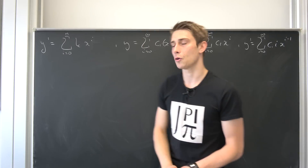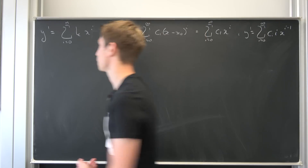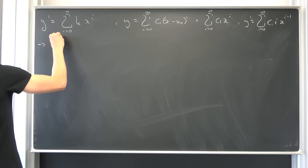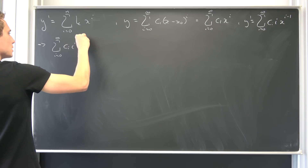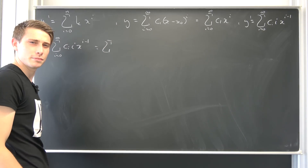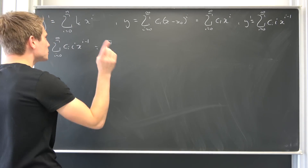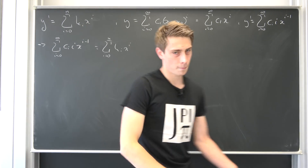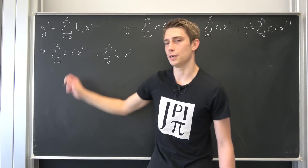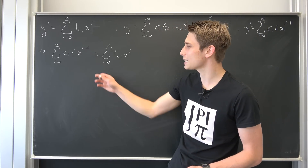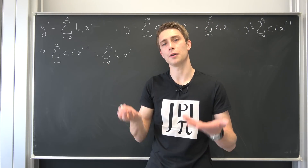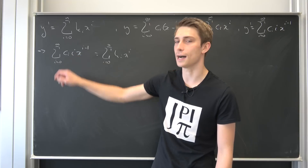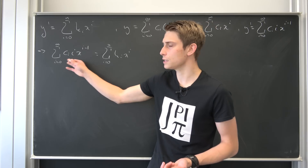We can plug this definition for y prime into the equation and see what we get. So y prime is the infinite sum from i equals 0 to infinity of c_i times i times x to the i minus 1, equals the finite sum from i equals 0 to n of k_i times x to the i. On the left side we have an infinite degree polynomial; on the right side we have a finite degree polynomial. There's no way to upgrade the right-hand side, but what we can do is downgrade the left side by choosing our coefficients c_i quite wisely.